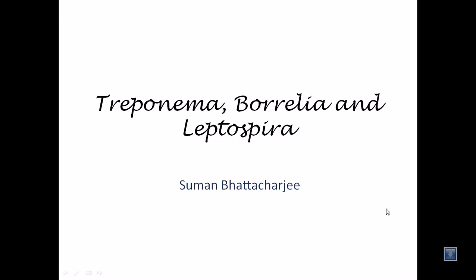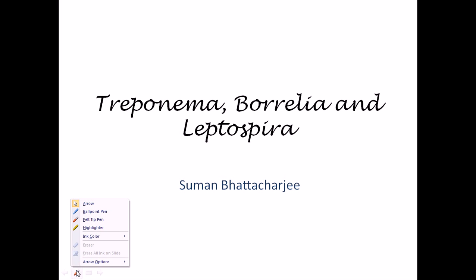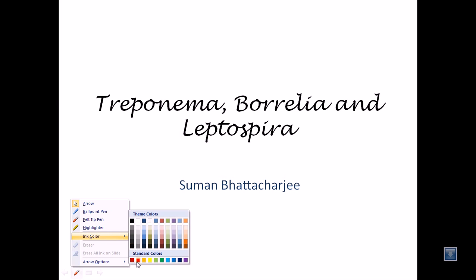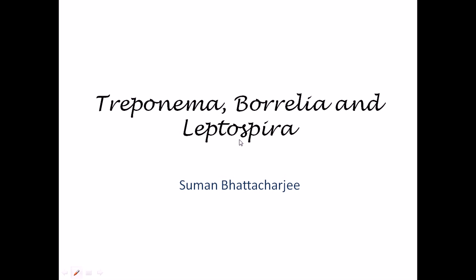We are going to talk about the type of bacteria called spirochetes. Among spirochetes, there are three types: Treponema, Borrelia, and Leptospira. These bacteria share some general characteristics in common but also differ from each other in important ways.